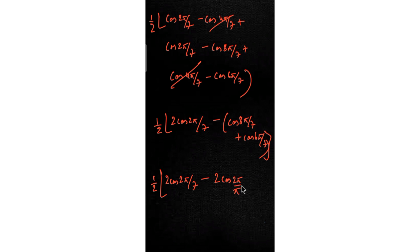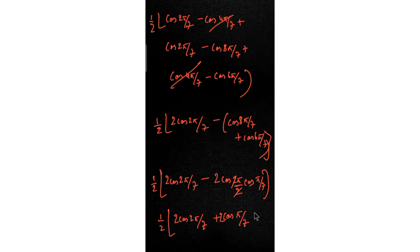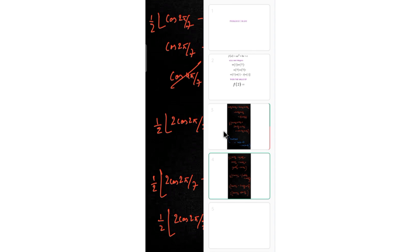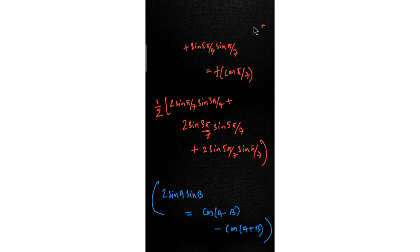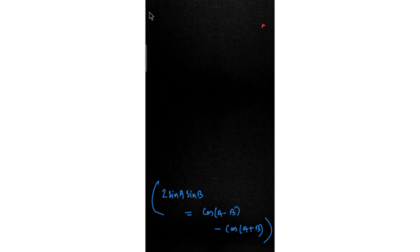So cos(8π/7) + cos(6π/7) = 2cos(π)cos(π/7). Since cos(π) = −1, this becomes −2cos(π/7). Therefore the expression becomes ½ · [2cos(2π/7) + 2cos(π/7)], which simplifies to cos(2π/7) + cos(π/7).